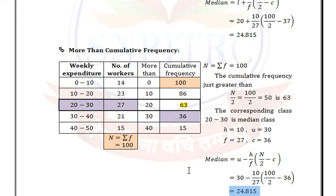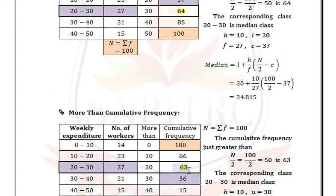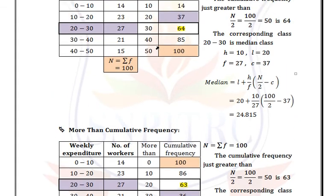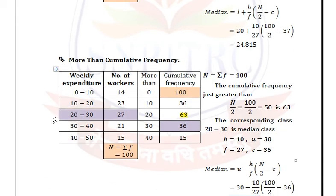Remember: in less than form, C is the cumulative frequency of the previous row. In more than form, C is the cumulative frequency of the next row.